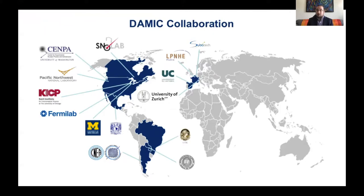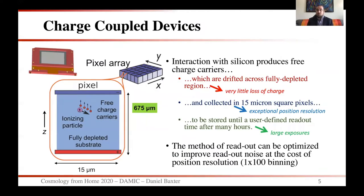I want to acknowledge the rest of the DAMIC collaboration — an international collaboration that has put an enormous amount of work in over many years. The DAMIC collaboration uses charge coupled devices, or CCDs, to search for dark matter. A CCD is essentially a block of instrumented silicon. An interaction in the silicon produces free charge carriers — electrons and holes — which we drift across the silicon bulk using an electric field with very little charge loss, and collect them in 15-micron-squared pixels. We can then transfer the collected charges across the pixel array into our readout node, storing them for a predefined readout time of many hours, giving us the large exposures needed for a dark matter search.